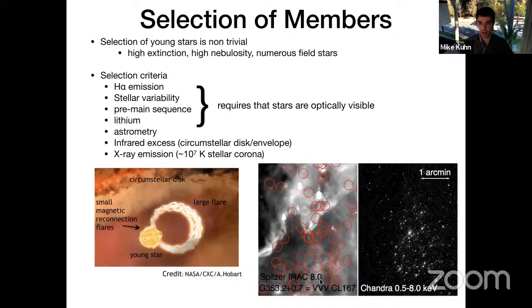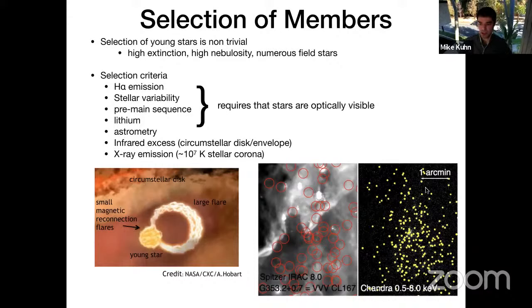As an example, this is the core of a massive star forming region shown in both infrared and X-ray. Objects selected using infrared excess are marked with red circles, while others are identified in the X-ray. In dense cores of embedded star forming regions, X-rays often give a less biased picture of where the stars are compared to the infrared.